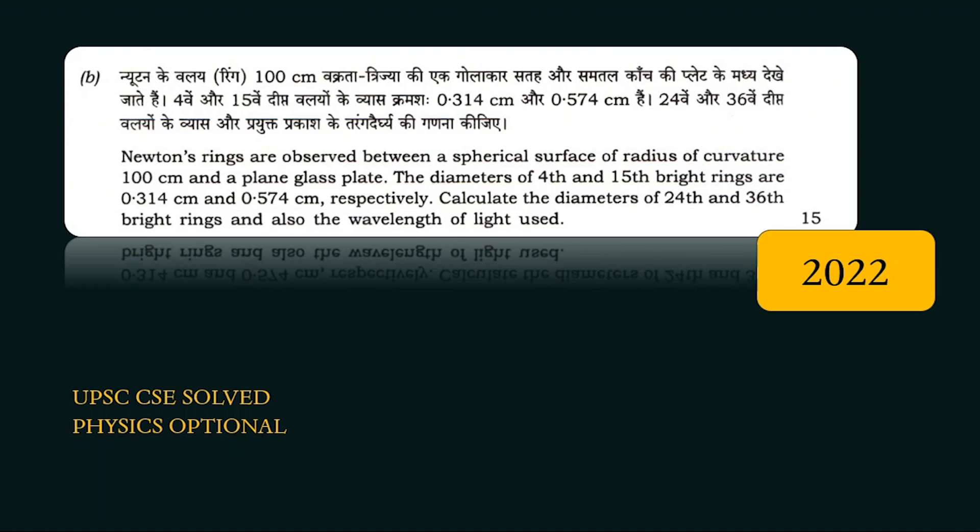Hello everyone, in today's video we will be seeing one of the previous year questions. We are given Newton's rings which are formed between a spherical surface of radius of curvature 100 centimeter and a plain glass plate. So we have a plain glass plate, above it is a plano-convex lens having a radius of curvature 100 centimeter.